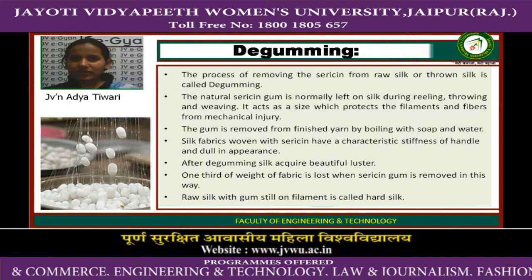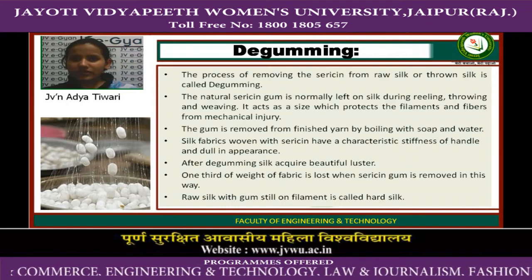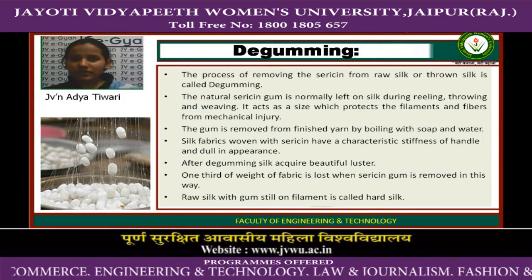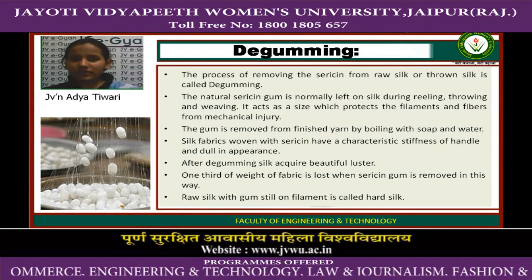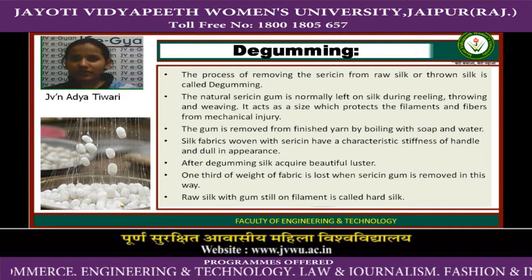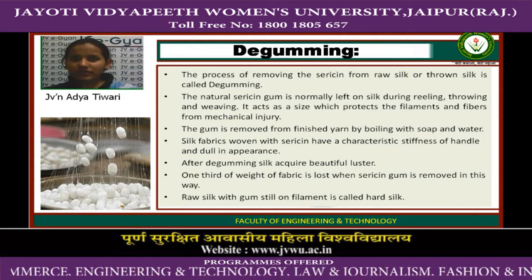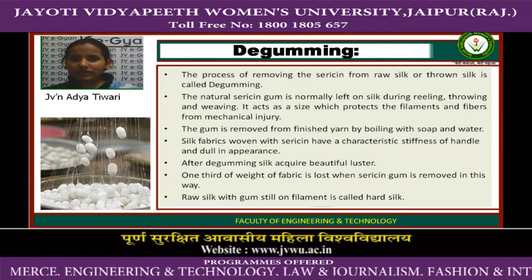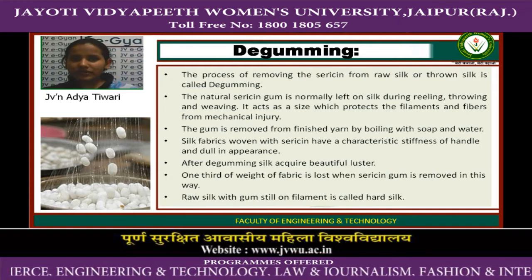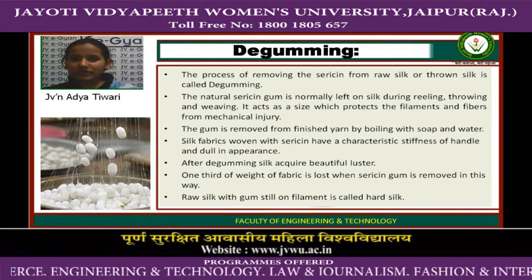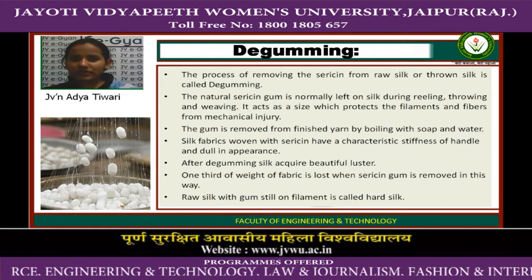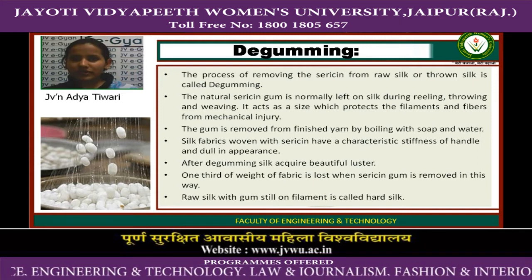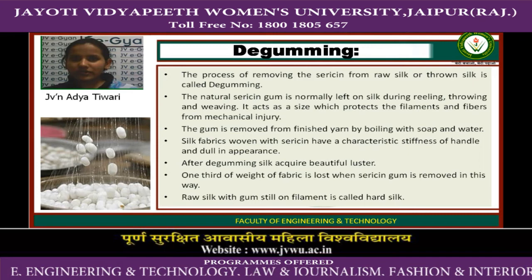The sericin acts as a size which protects the filaments and fibers from mechanical injury. The gum is removed from finished yarn by boiling with soap and water. Silk fabric woven with sericin has a characteristic stiffness of handle and dull appearance. After degumming, silk acquires a beautiful luster, and one third of the weight of the fabric is lost when sericin gum is removed.